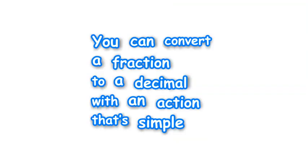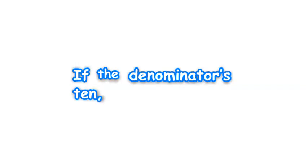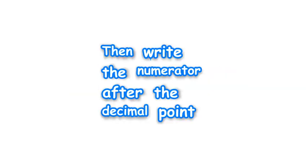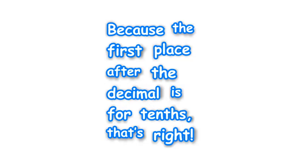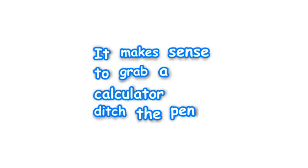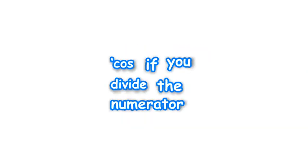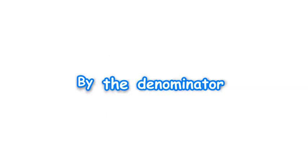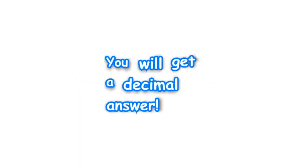You can convert a fraction to a decimal with an action that's simple, yet mathematically skillful. If the denominator's ten, then write the numerator after the decimal point, because the first place after the decimal is for tens, that's right. When the denominator is not a multiple of ten, it makes sense to grab a calculator, ditch the pen. Because if you divide the numerator by the denominator, you will get a decimal answer.